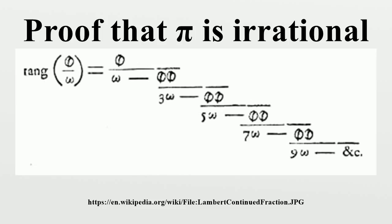Lambert's proof: In 1761, Lambert proved that pi is irrational by first showing that this continued fraction expansion holds. Then Lambert proved that if x is non-zero and rational then this expression must be irrational.